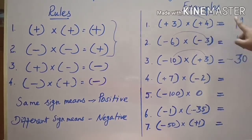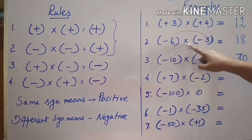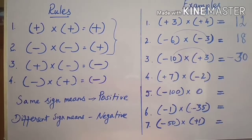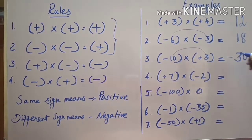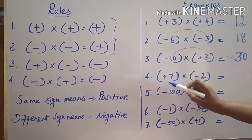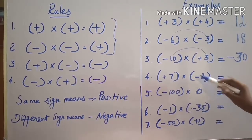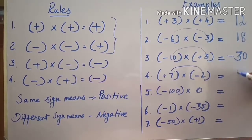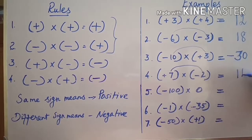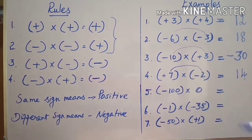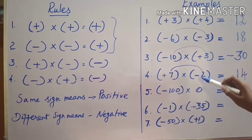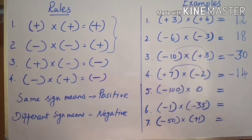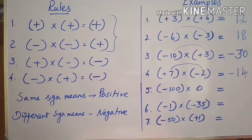So to summarize: positive into positive is positive; negative into negative is also positive; one negative and one positive gives a negative result. Fourth example: plus seven into minus two. Find the product first — seven into two is fourteen. One is positive and one is negative, so different signs mean the answer is negative: minus fourteen.